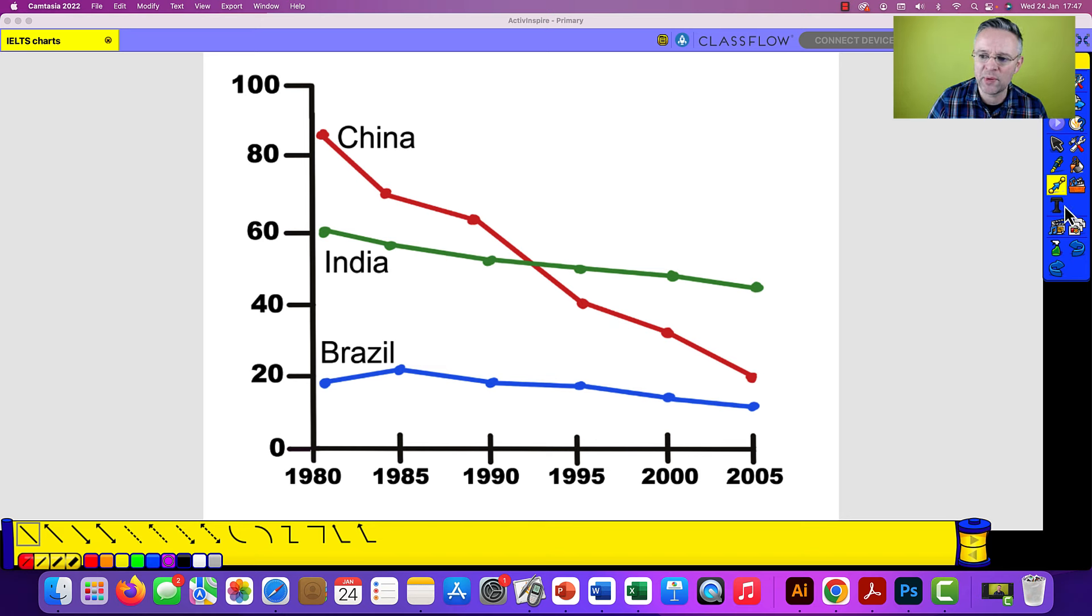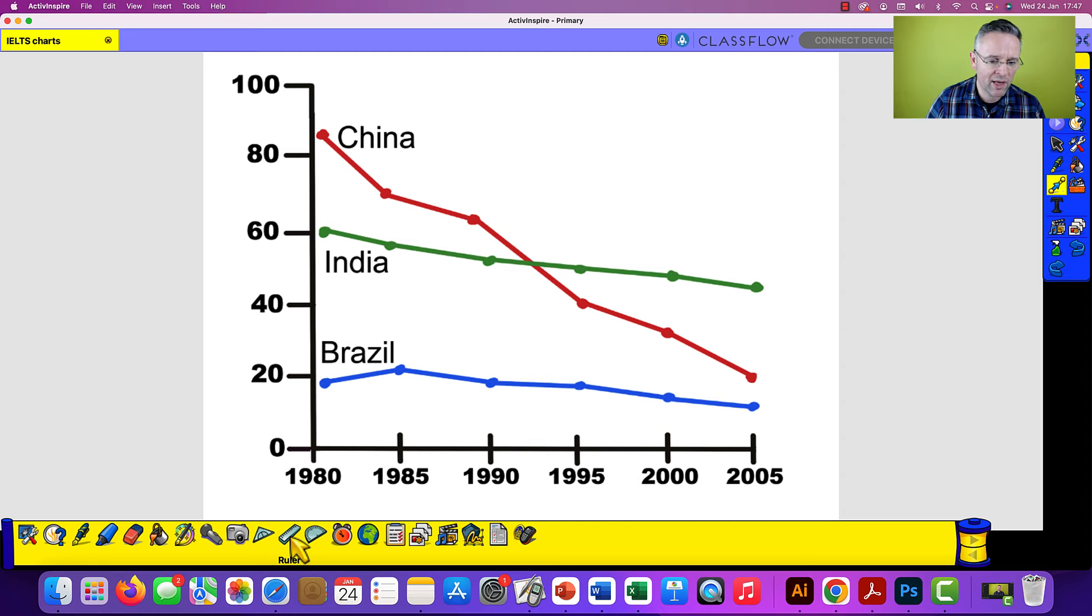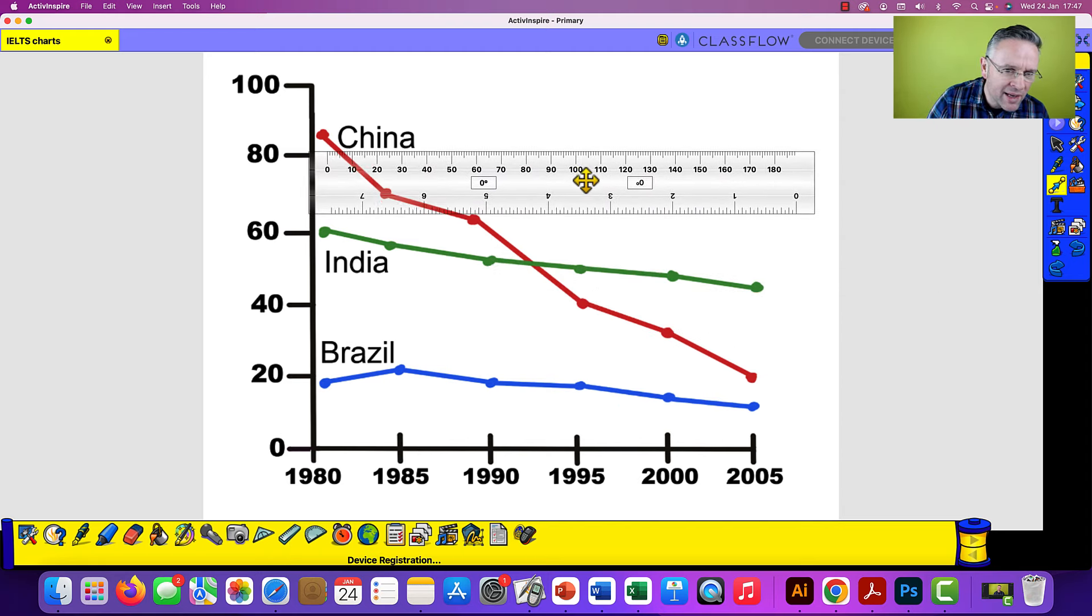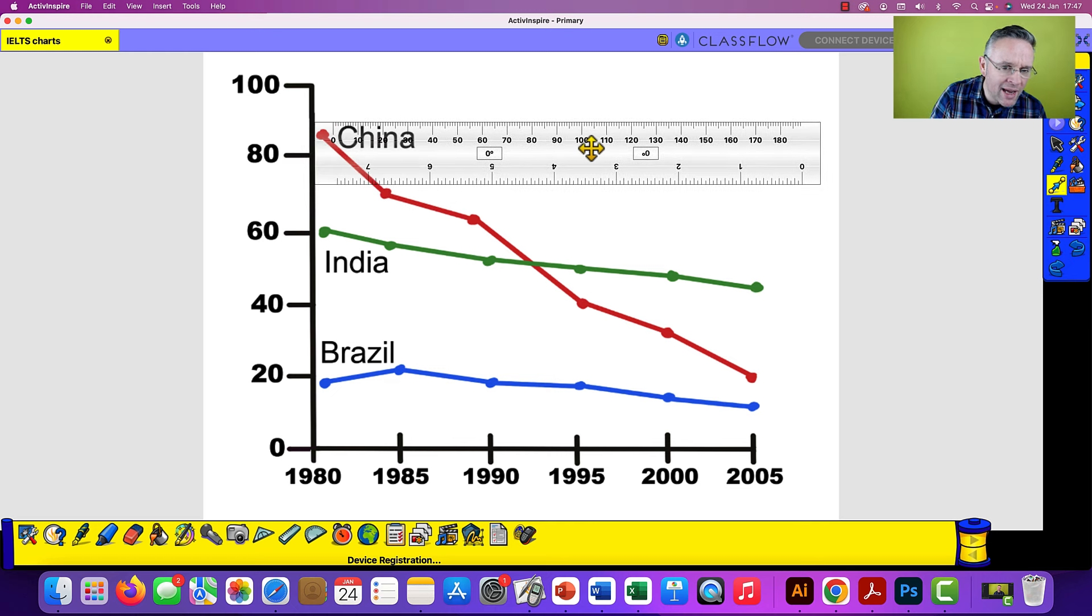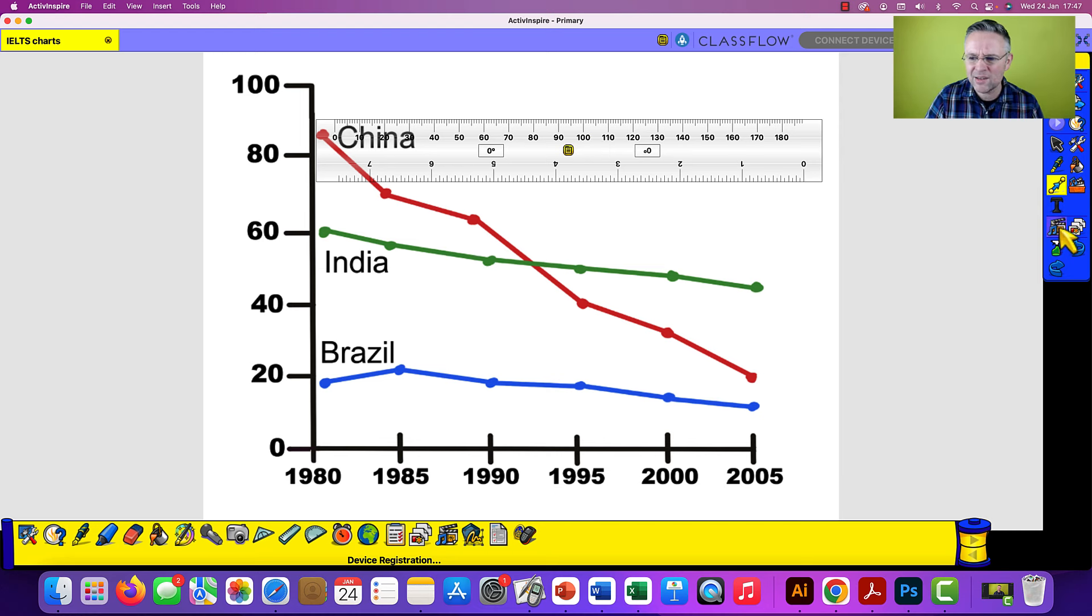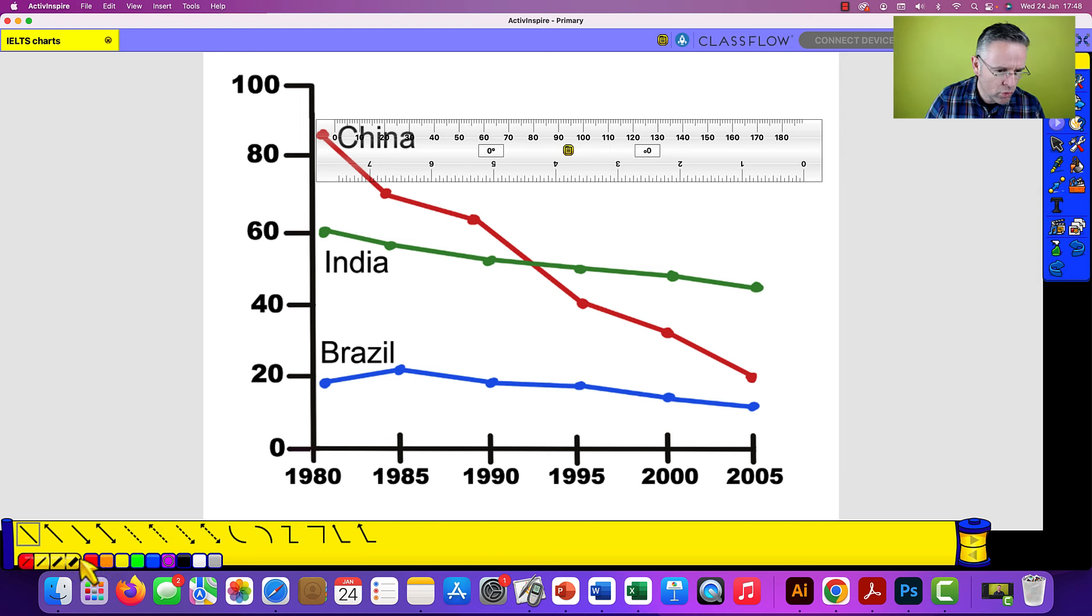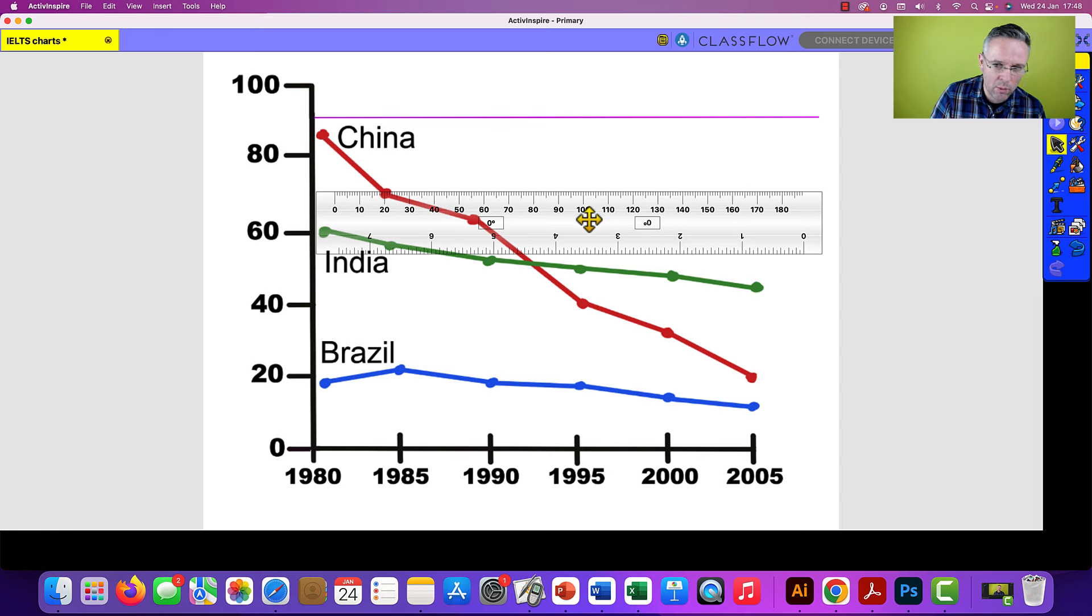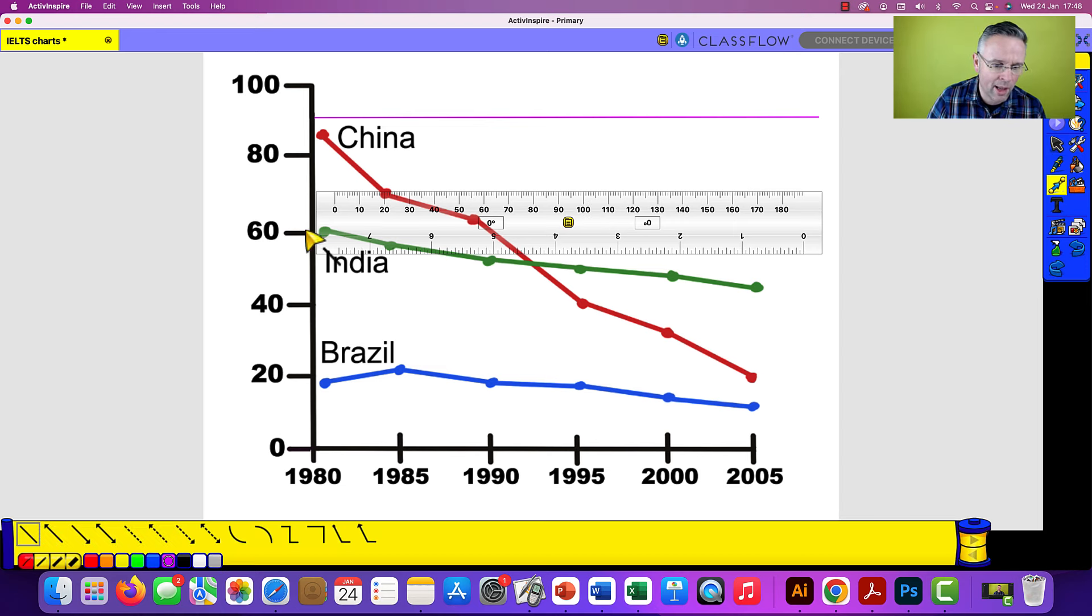Now I have a top tip that I highly recommend you follow. So when you are in your exam, make sure that you have a ruler and find halfway between 80 and 100. I think that is about there. And then with a pen, draw a line that goes along like this. And then you are going to do that for the next part down. You're going to draw another line like that.